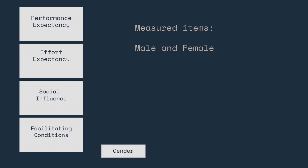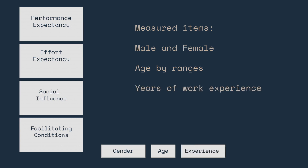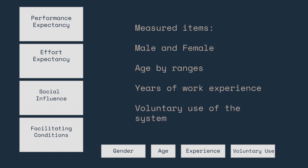Moderators include: Gender, which measures male and female; Age, which measures age by ranges; Experience, which measures years of work experience; and Voluntary Use, which measures voluntary use of the system.